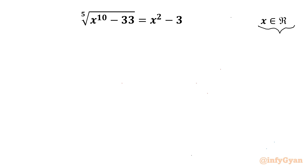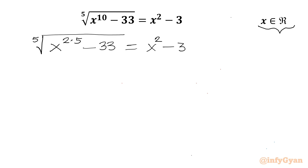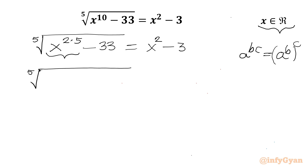Let us get started by writing our equation. We can write 10 as 2 times 5, so we have the 5th root of x to the power (2×5) minus 33 equal to x squared minus 3. Using the exponential property a^(b·c) = (a^b)^c, this becomes the 5th root of (x squared) to the power 5, minus 33, equal to x squared minus 3.